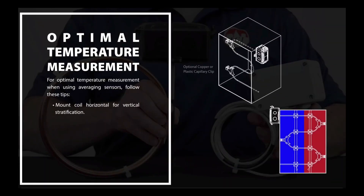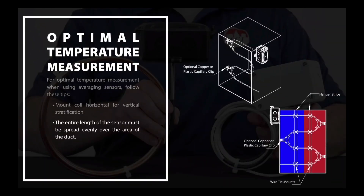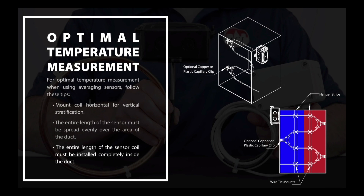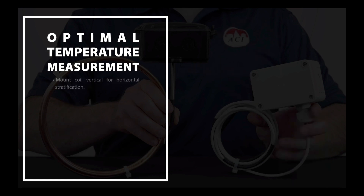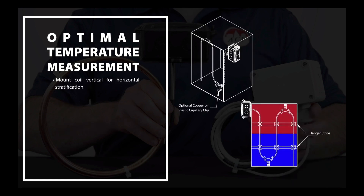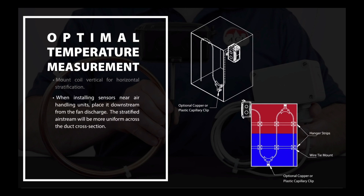For optimal temperature measurement when using averaging sensors, follow these tips: mount the coil horizontally for vertical stratification. The entire length of the sensor must be spread evenly over the area of the duct, and must be installed completely inside the duct — if any part is exposed to temperatures outside the duct, your reading will be skewed. Mount the coil vertically for horizontal stratification. When installing the sensor near air handling units, place the sensor downstream from the fan discharge, as the stratified air stream will be more uniform across the duct cross section.